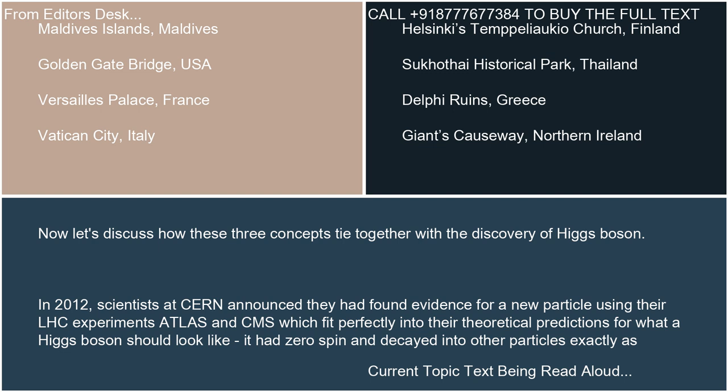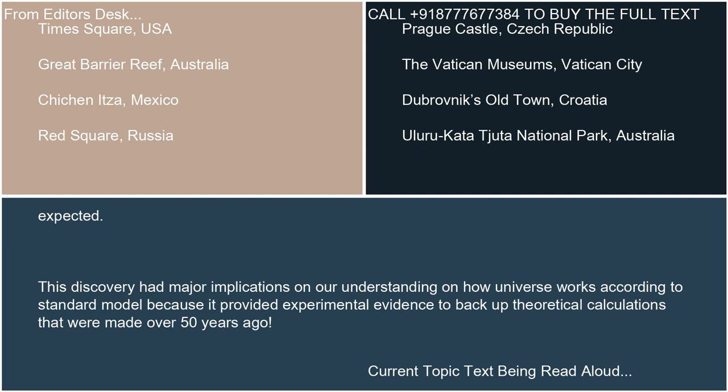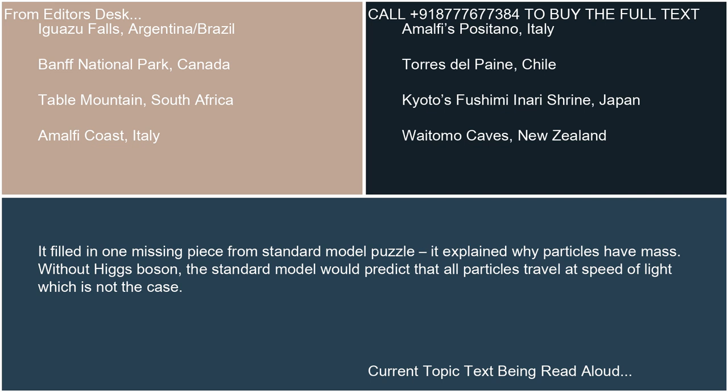Now let's discuss how these three concepts tie together with the discovery of the Higgs boson. In 2012, scientists at CERN announced they had found evidence for a new particle using their LHC experiments ATLAS and CMS, which fit perfectly into their theoretical predictions for what a Higgs boson should look like. It had zero spin and decayed into other particles exactly as expected. This discovery had major implications for our understanding of how the universe works according to the Standard Model.